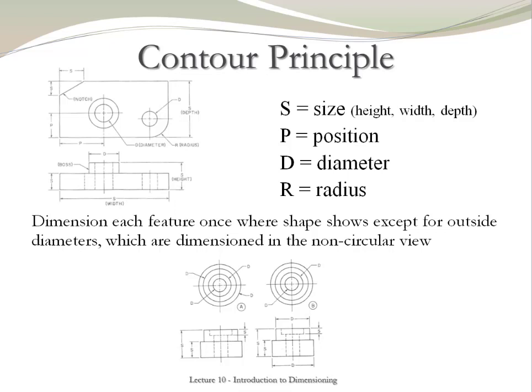Let's start with the contour principle. This principle uses four main types of dimensions to describe an object: size, position, diameter, and radius. This must be properly used in order to provide all necessary details about the features on an object.